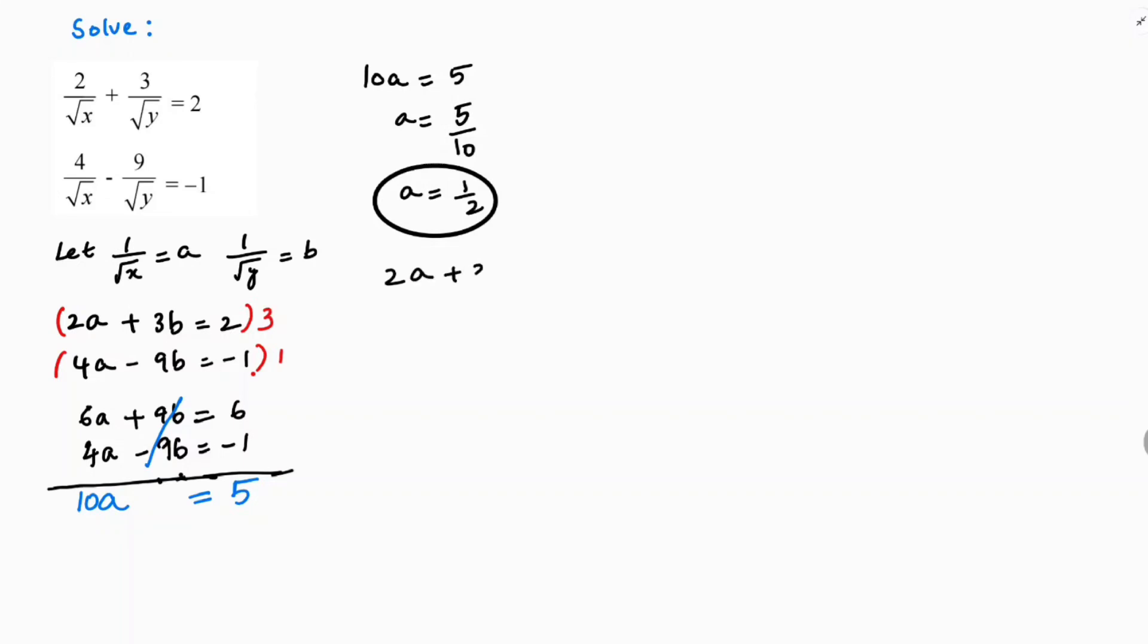First equation I'll take: 2a plus 3b is 2. 2 times a, a is 1 by 2, plus 3b is 2. 2 and 2 cancel, 1 plus 3b is 2. 3b is 2 minus 1. 3b is 1, b is 1 by 3.